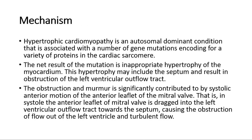For its mechanism, hypertrophic cardiomyopathy is an autosomal dominant condition that is associated with a number of gene mutations encoding for a variety of proteins in the cardiac sarcomere. The net result of the mutation is inappropriate hypertrophy of the myocardium. This hypertrophy may include the septum and result in obstruction of the left ventricular outflow tract.